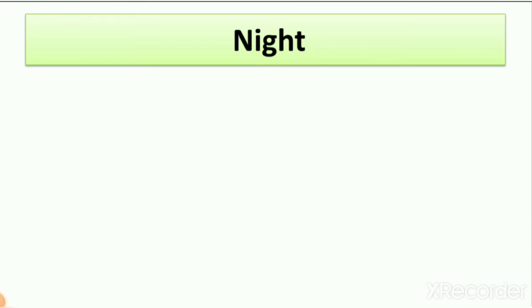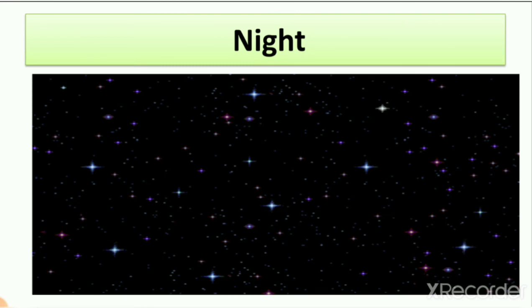Our next hard word is 'night,' spelled N-I-G-H-T. In this lesson we learn about day and night, and the sky looks different at night. At night there is no sun, that's why it is dark. Here you can see the picture of night — the sky is dark and you can see the stars in the sky.